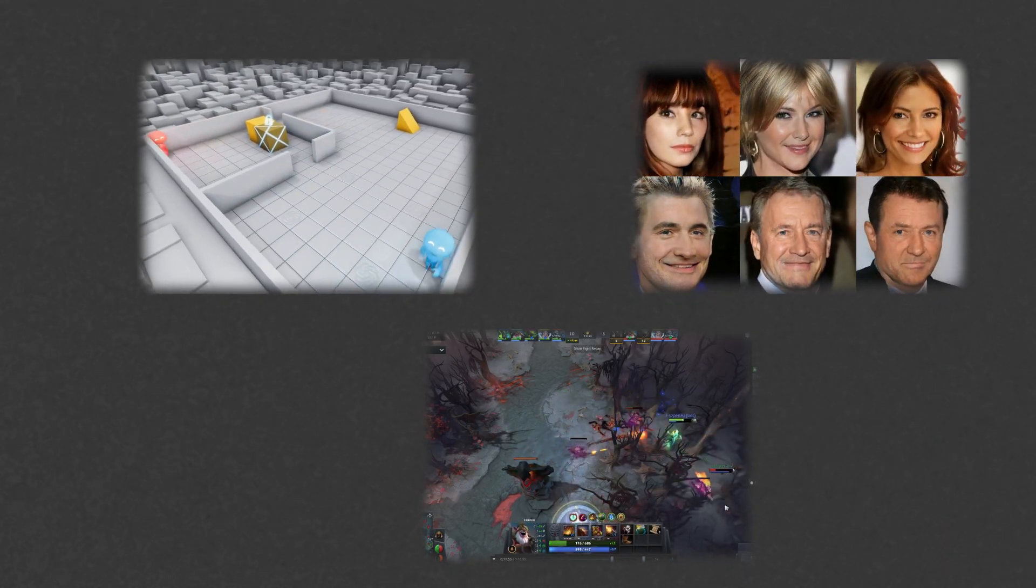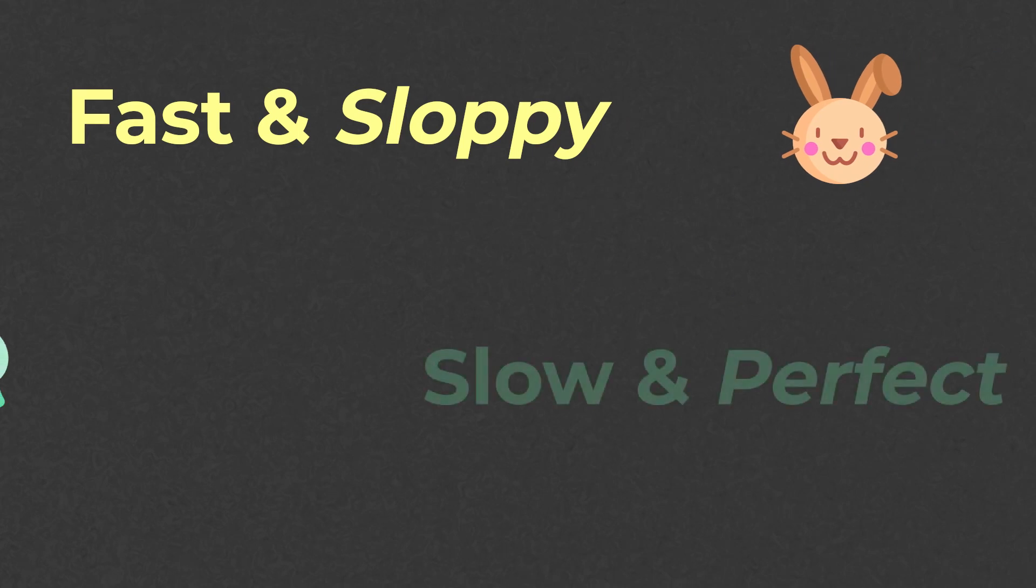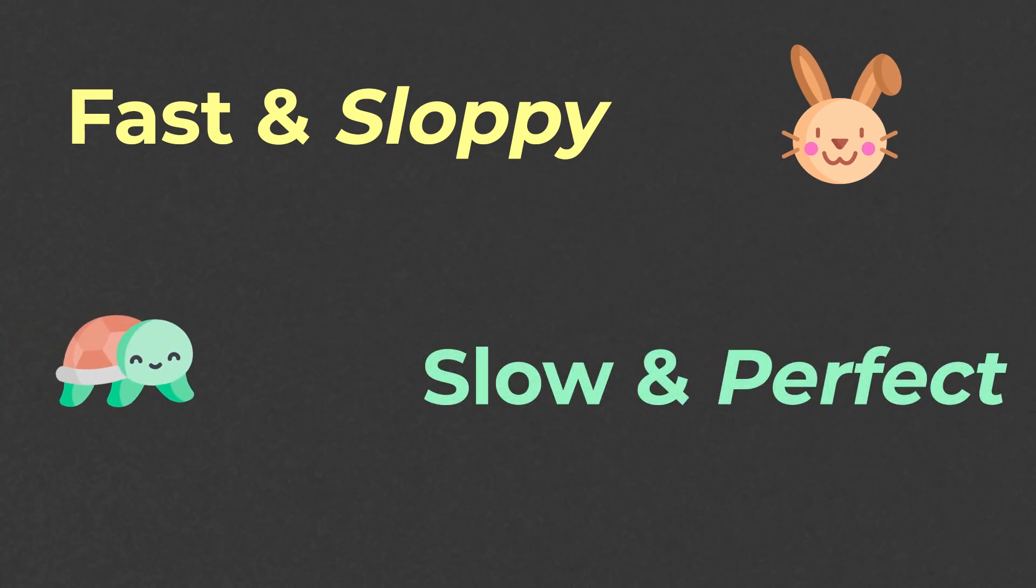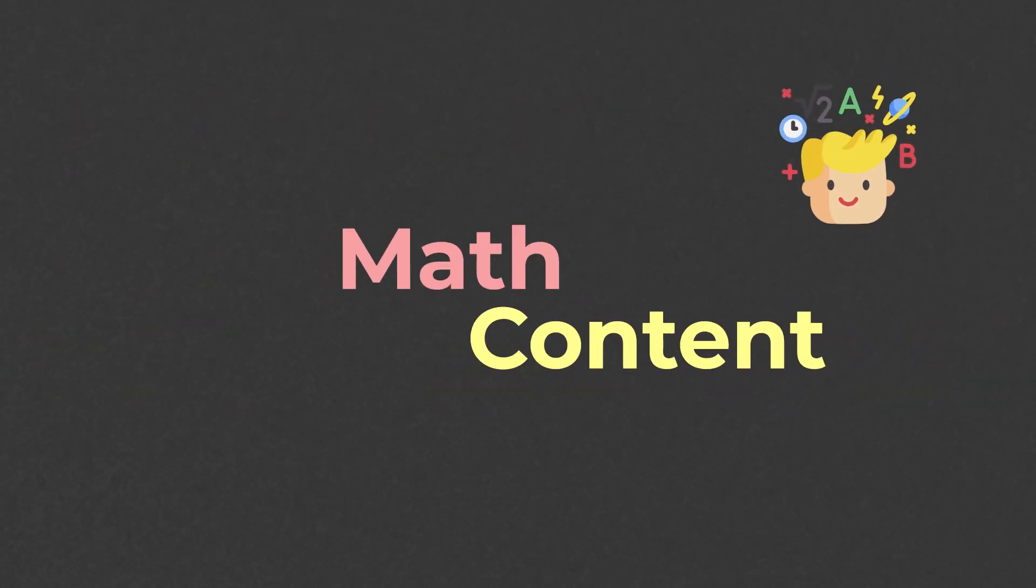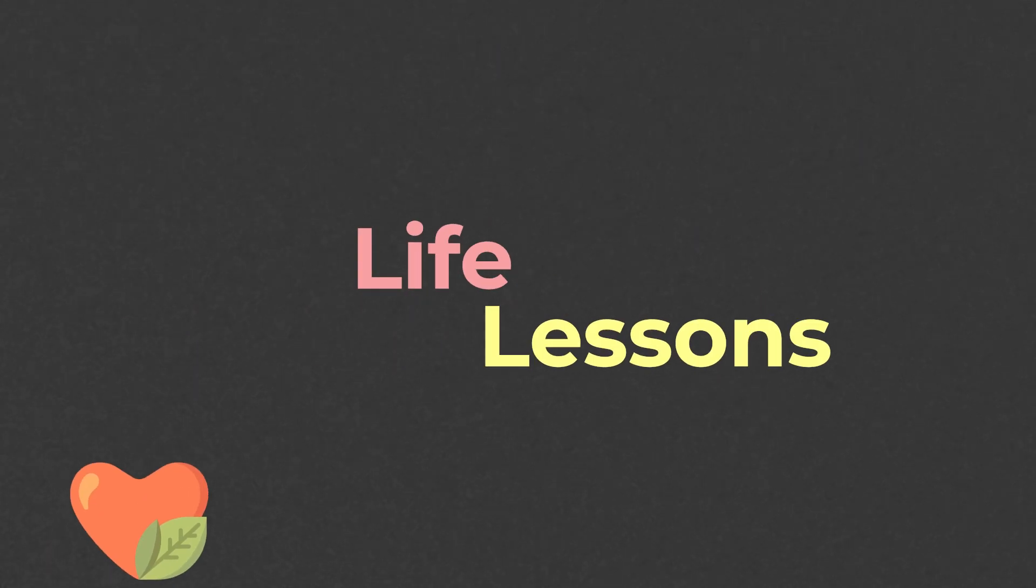And the moral of the story is that fast and sloppy is often better than slow and perfect. I know, you come for math content but you leave with life lessons. This was Stochastic Gradient Descent in 3 minutes. If you liked the video, like and subscribe and see you next time!